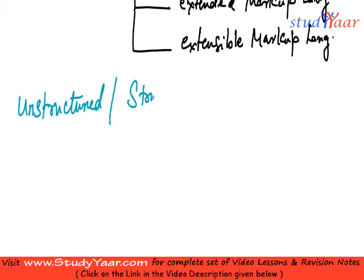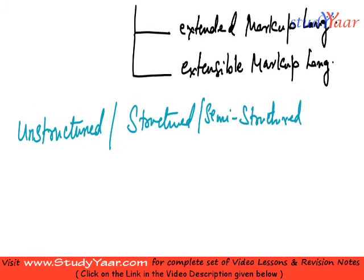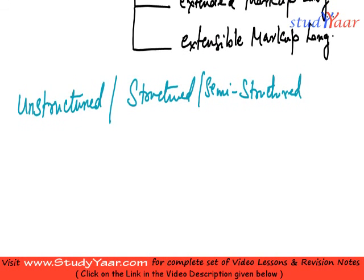Unstructured, structured, and semi-structured data. We have already seen what is unstructured and structured data in the relational database session. So first I am going to tell you what is structured data. Data stored in the database is usually structured data because we have the attributes and other stuff that define the structure of the data that we are putting in the database.